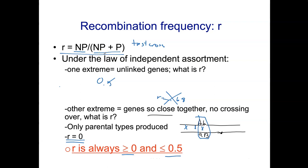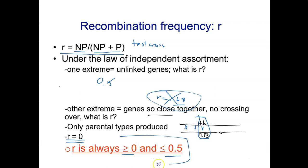If you get an R value greater than 0.5, something is not correct — the parentals and non-parentals may not be chosen correctly, or the data may be mis-categorized. Always check your work. If you punch it into the calculator and get that result, punch it in again to make sure you didn't make a small mistake. If you get the same answer again, there's something wrong with how you've set up your calculation.